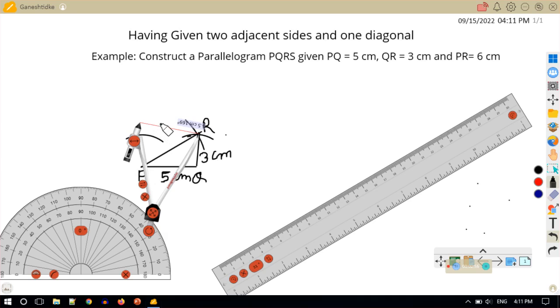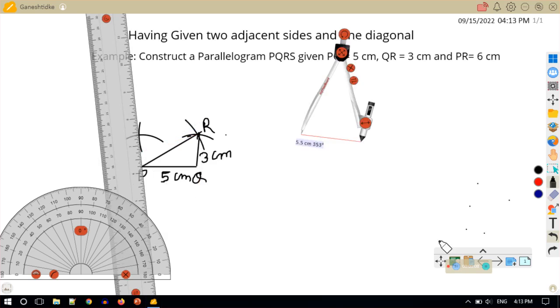Now, with R as the center and radius is equal to 5 centimeter, I will draw an arc intersecting the previous arc. So I will name this point of intersection as point S.